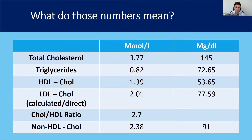On the left hand side you've got the standard components that you see in a cholesterol panel: total cholesterol, triglycerides, HDL cholesterol, LDL cholesterol — which can be both calculated and direct — the cholesterol to HDL ratio, and then the level of non-HDL cholesterol. In the other columns you've got the units. More commonly in Europe you might see millimoles per litre, and in America you'll often see milligrams per deciliter.